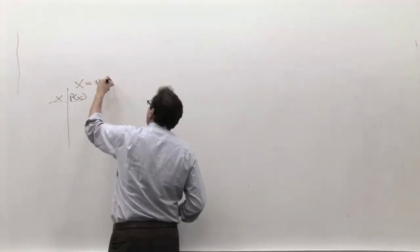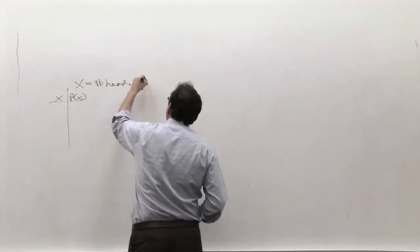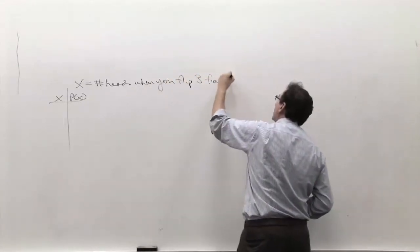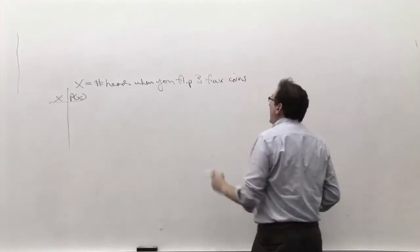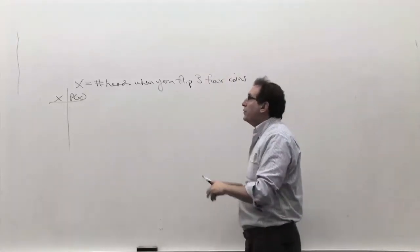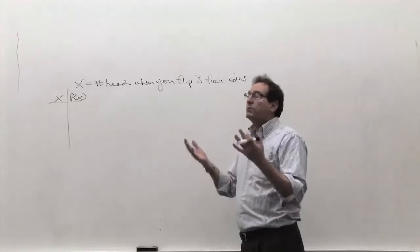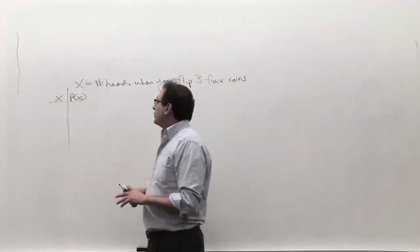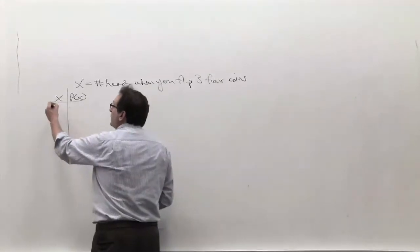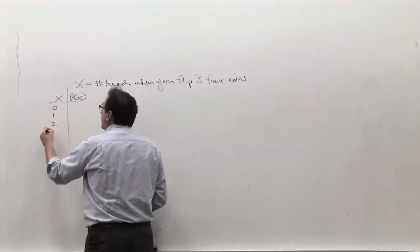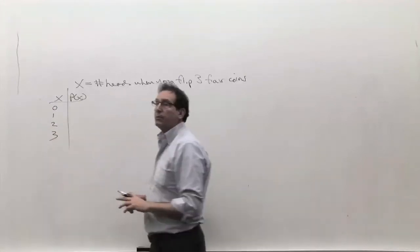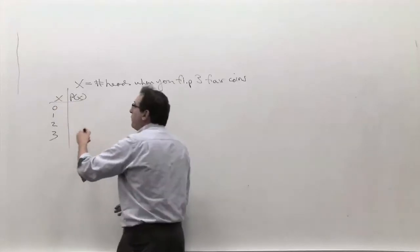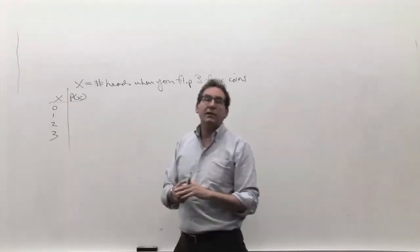This equals the number of heads when you flip three fair coins. We basically realized we can summarize all the results of that particular random situation by a little chart called the probability distribution of the random variable chart. And what is the chance of that happening? We've worked out those probabilities about five or six different ways by now.